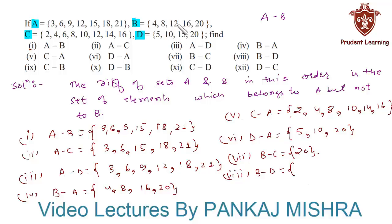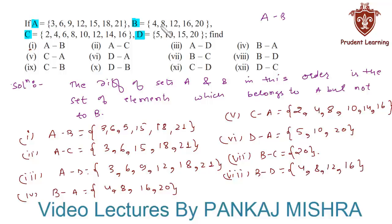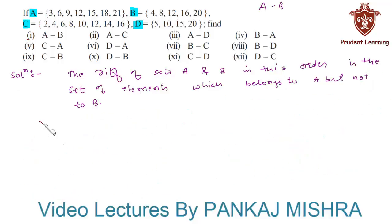Next we have to find B minus D, that is the set of all elements that are in set B but not in set D. Here we can see that 4, 8, 12 and 16 are present in set B only and not in set D.